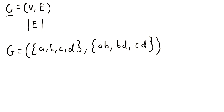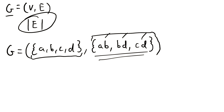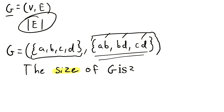So let's look at an explicit example of a graph. Here is one, also called G coincidentally, and we've got the vertex set here and the edge set here. Since we're looking for the size of the graph, we're interested in this edge set. The size of the graph is the number of edges, which is the cardinality of the edge set. So how many edges are there? We simply have to count them up. We've got one, two, three edges. Thus, the size of G is three because there are three edges in the graph.